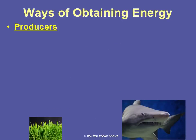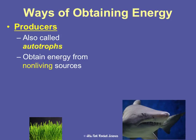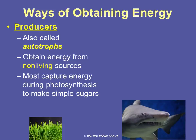There are several ways of obtaining energy. One way is being a producer, also known as an autotroph — auto meaning self, troph meaning nourish, so self-nourishers. They obtain energy from non-living sources; their actual body makes their own food. The majority of producers capture energy during photosynthesis to make simple sugars, but there's another process they can do as well. Examples of producers are plants, algae, and some bacteria.